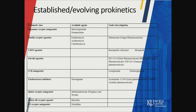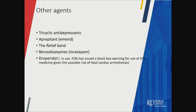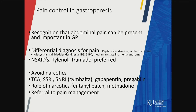Other prokinetic options include dopaminergic receptor agonists, motilin agonists, 5-HT4 agonists, ghrelin analogs (with some studies showing improvement), cholecystokinin antagonists, cholinesterase inhibitors, and opiate receptor agonists. Pain control is also important; pain is not captured in the GCSI symptom questionnaire, but it is important to recognize and address. The differential diagnosis of pain is wide, especially in CF patients — try to avoid narcotics as much as possible.